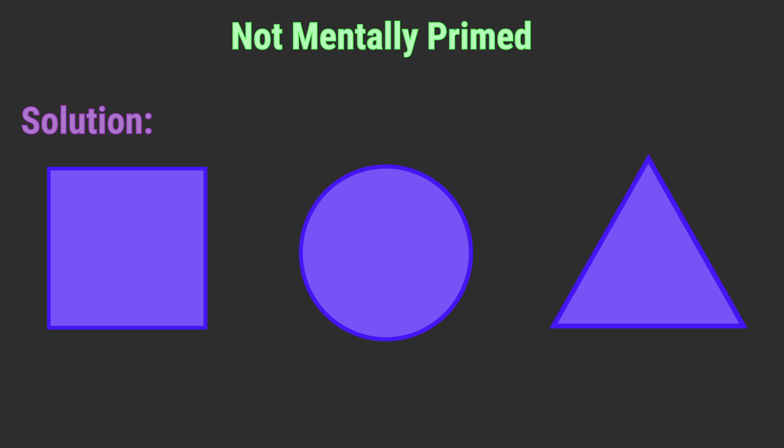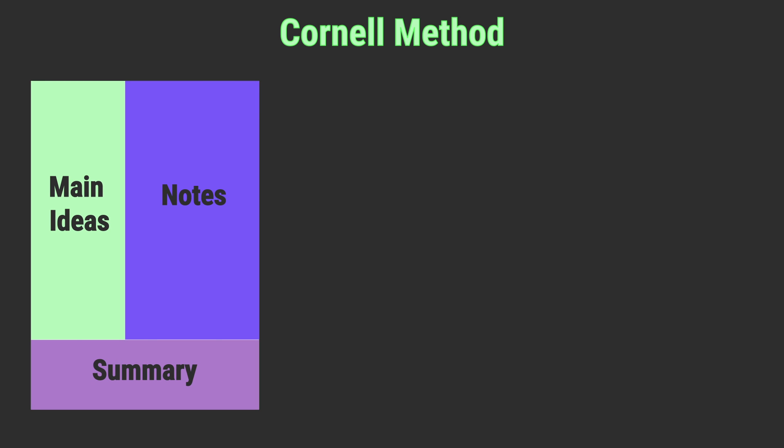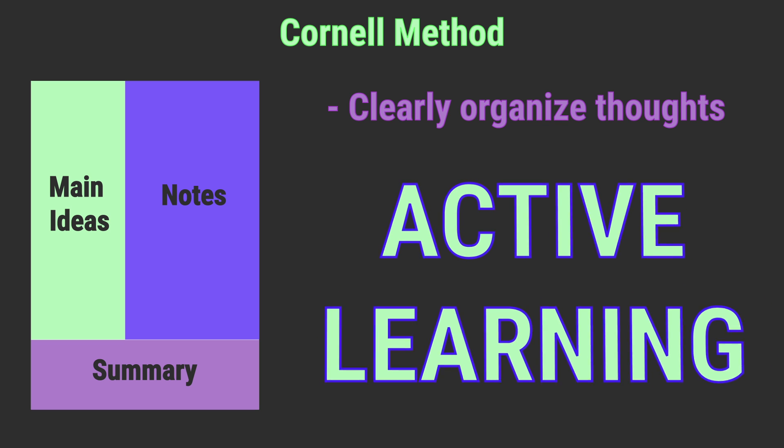So now let's go over how to take good notes. The note-taking method I recommend is the Cornell method. Split the page up into three sections: main ideas, summary, and notes. This method is going to help you clearly organize your thoughts in the lecture. More importantly, it promotes active learning.